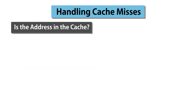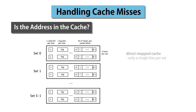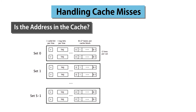Let's describe a typical cache architecture. The cache is divided into an array of s sets, numbered from 0 to s-1. S is typically a power of 2. In turn, each set contains e lines. The number of lines per set is determined by the cache designer. If there's only a single line per set, it's called a direct mapped cache. If there's more than one line per set, it's called a set associative cache. Finally, each line contains the contents of b consecutive memory addresses, where b also is a power of 2.